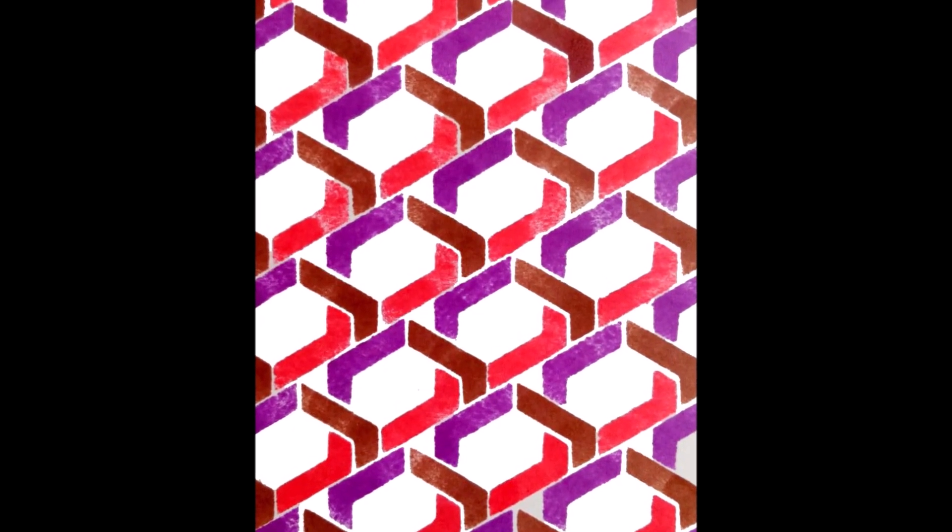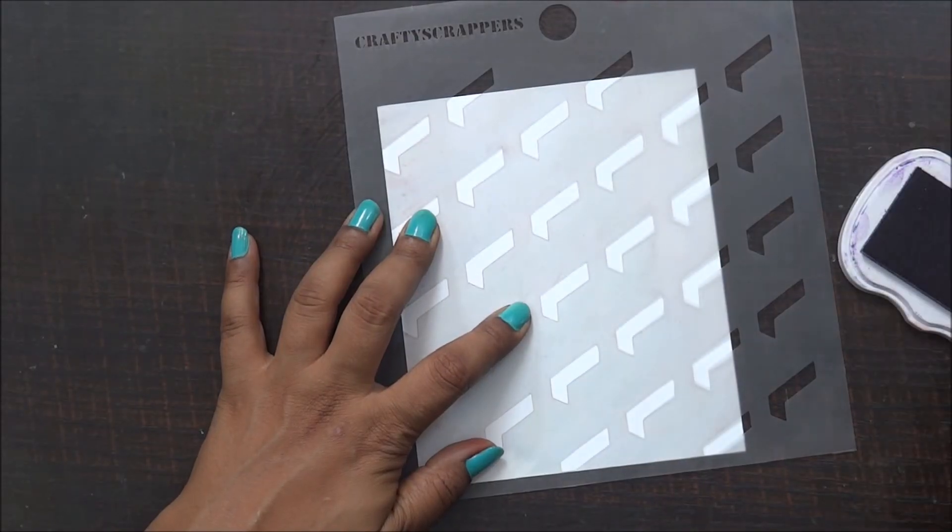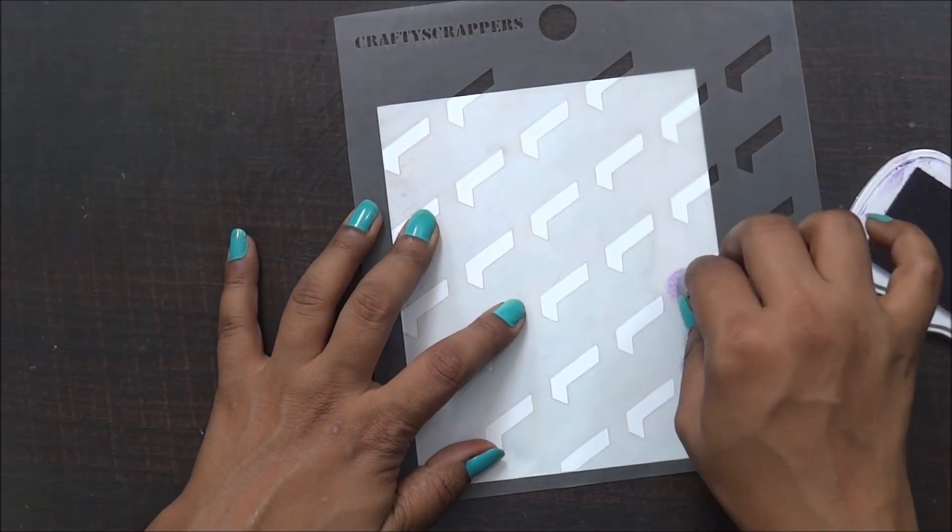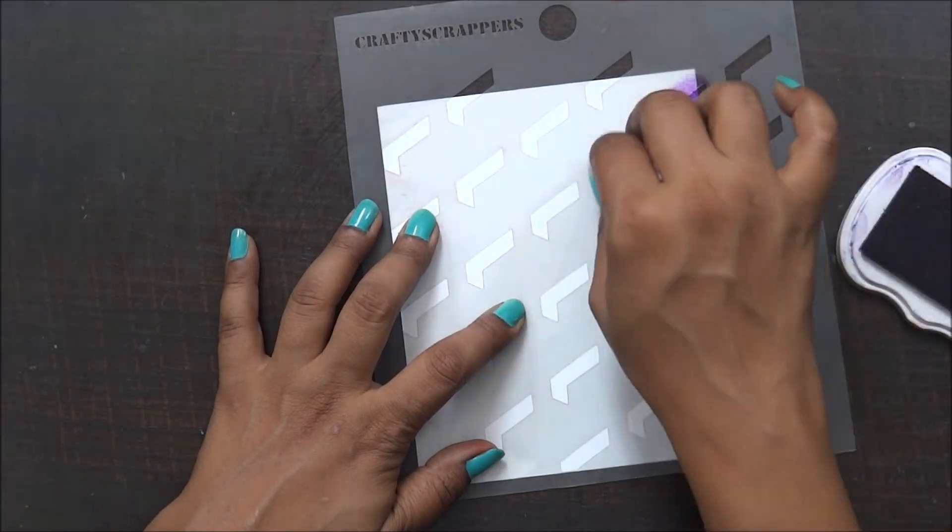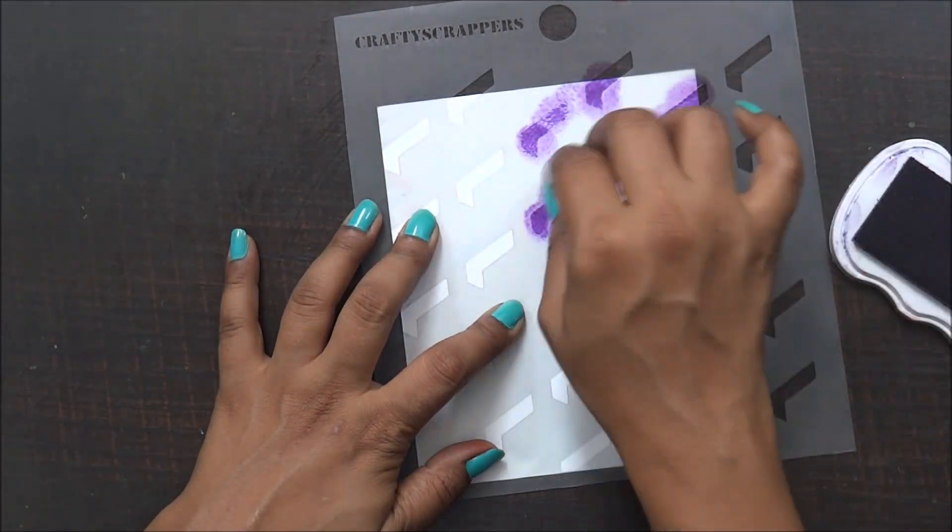For my first pattern, I'm going to use one stencil from the set. Here I have taken a white color thick cardstock, and with one shade of ink I am going to do the same pattern on my cardstock.